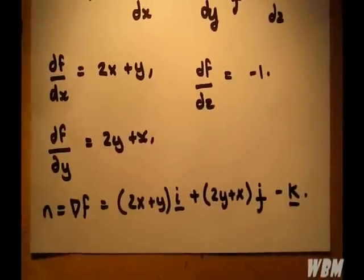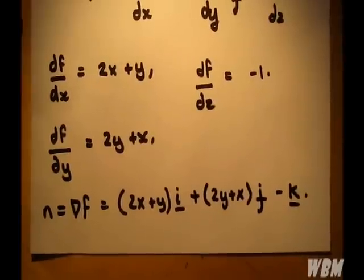Now what we're interested in is the normal at the point (1,0,1), which is the given point.